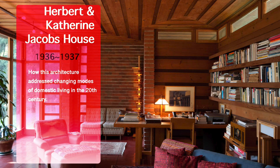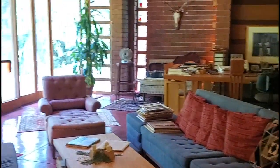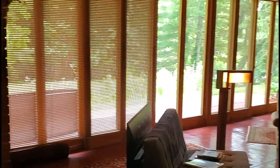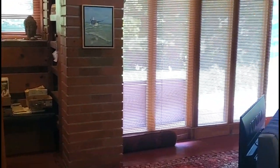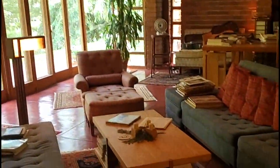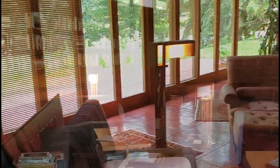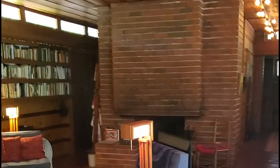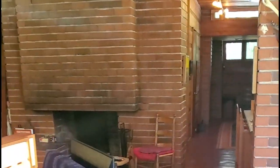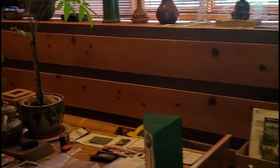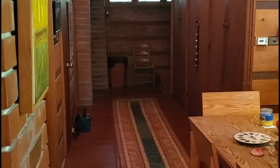Welcome to the Herbert and Catherine Jacobs House, Frank Lloyd Wright's first built Usonian style house. The house was designed in 1936, built in 1937, and revolutionized American domestic architecture in the mid-20th century. Wright eliminated all walls between the living room, dining room, and kitchen, essentially borrowing space from each room to make the total live much larger than the small 1,400 square foot footprint.